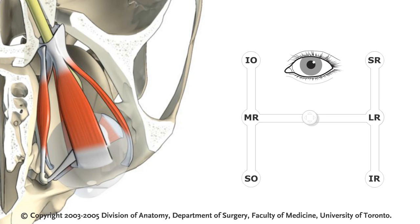Today's subject is the control of eye movements by higher cortical centers. But to understand the control, we have to understand the eyes and how they move. There is a nice animation from the University of Toronto showing an eye in its primary position staring straight ahead. On this side, we have the muscles, and we're looking down on them as if we were lying in the skull looking down from the bottom of the frontal lobe. This would be the superior rectus muscle.